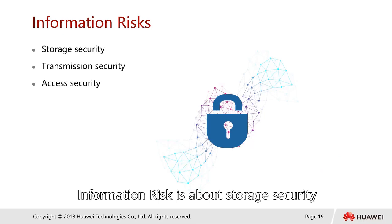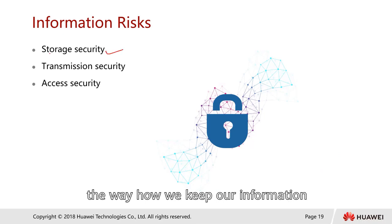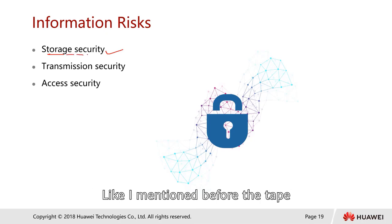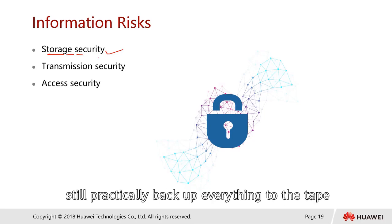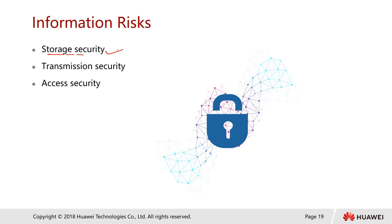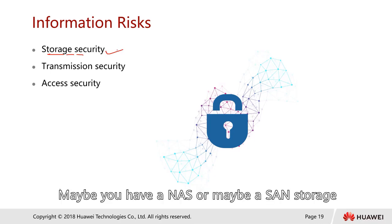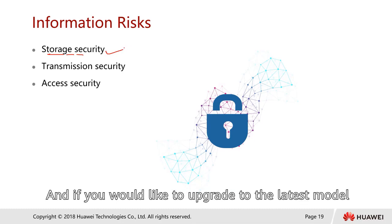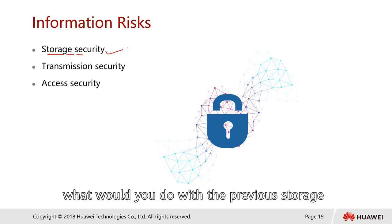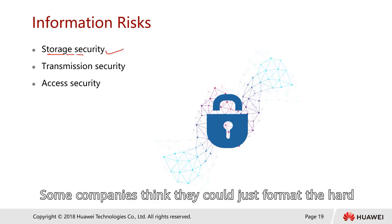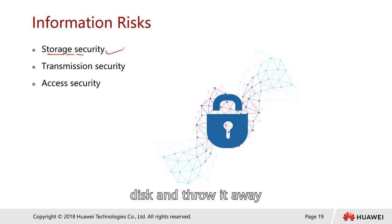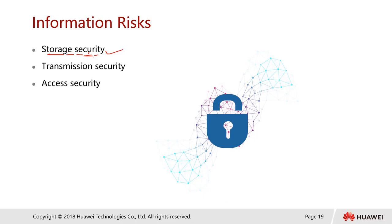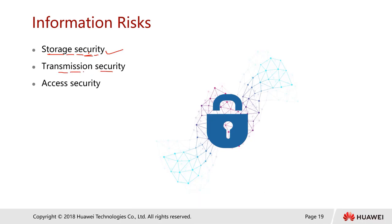Information risk is about storage security — the way we keep our information. For example, if a company still uses tape drives for backup, where are those tapes kept? How secure is the NAS or SAN storage? Also, when upgrading to a newer storage model, some companies just format the hard disk and throw it away, which creates a risk. There should be a proper way of retiring old storage products.